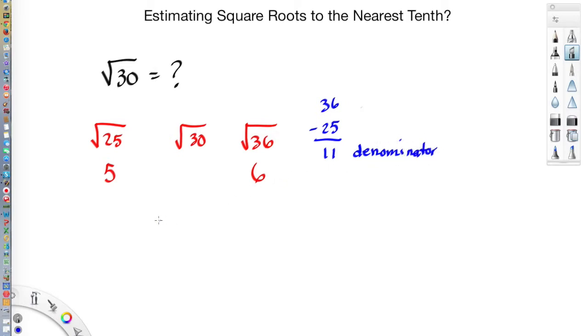So now it's going to be 5 and so many elevenths. And then the difference between my actual number and my first perfect square of 25 is 5. And that 5 becomes my numerator. So my answer is 5 and 5 elevenths, 5 and 5 elevenths.